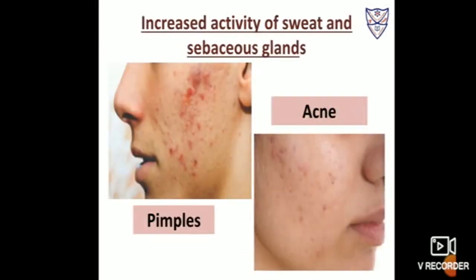Next is increased activity of sweat and sebaceous glands. Human skin has two important glands: sweat glands and sebaceous glands. Sweat glands produce sweat and sebaceous glands produce oil, or sebum, which keeps the skin oily. During puberty, there will be increased activity of these glands, so the secretion of sweat and oil will increase. Because of this, adolescents can get skin conditions like acne and pimples on the face, so it is very necessary for them to maintain hygiene during this period.